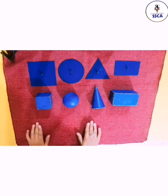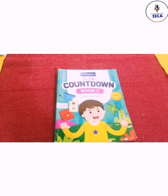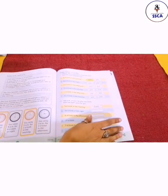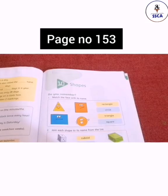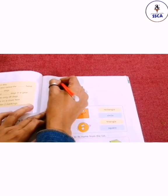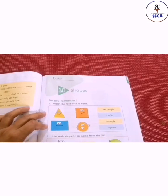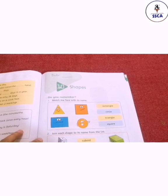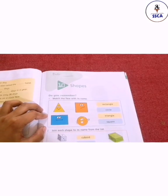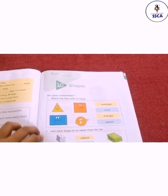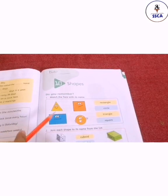Now let's move on to today's book work. Everyone take out your maths books and open page number 153. On this page, first mention today's date — aaj ki date daalna mat bhulio. This page has shapes work. These are flat shapes: triangle, square, rectangle, and circle.